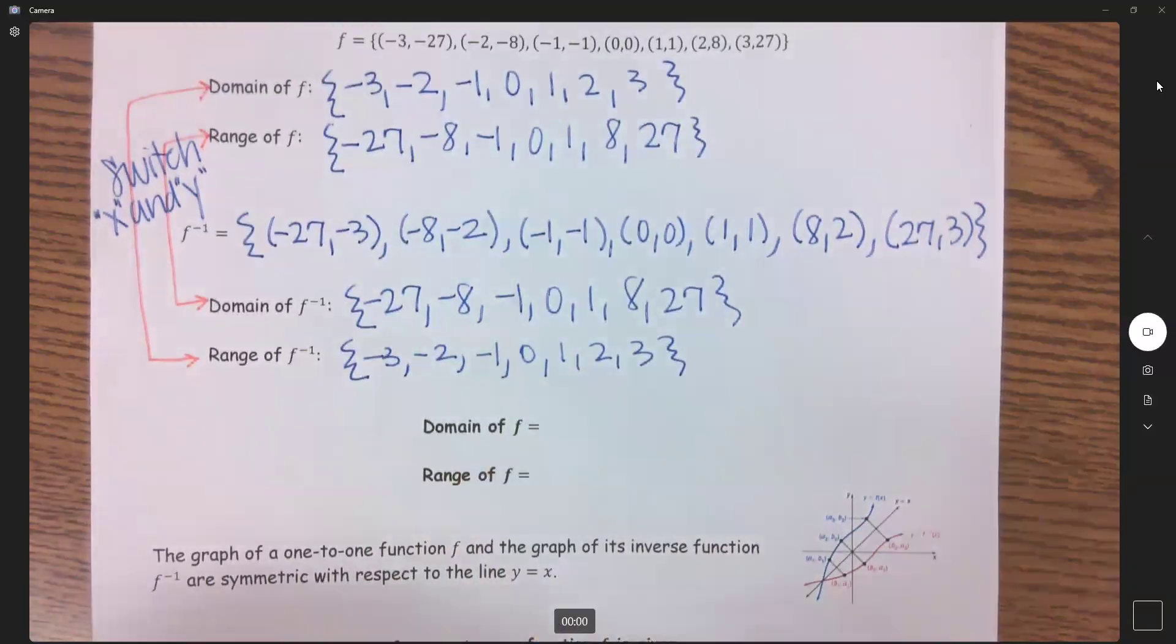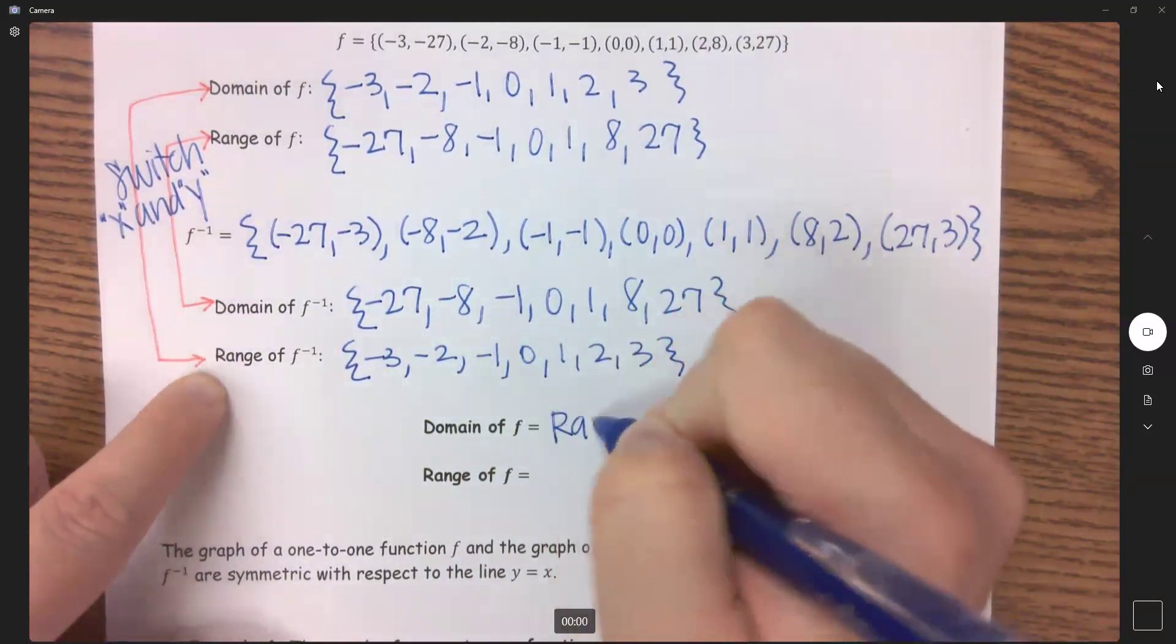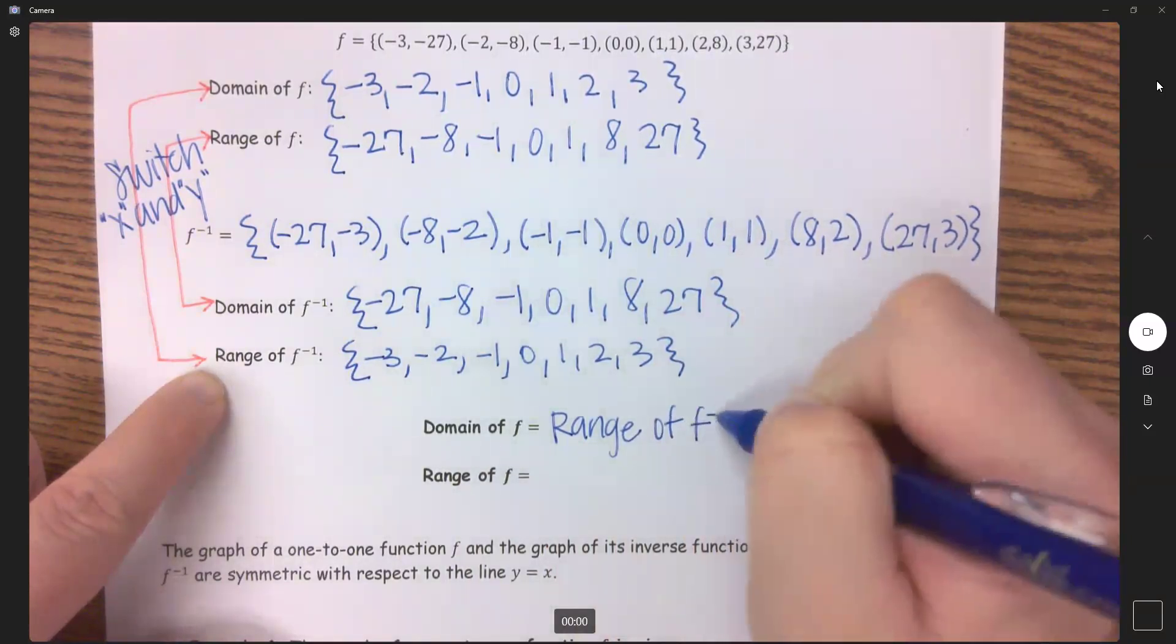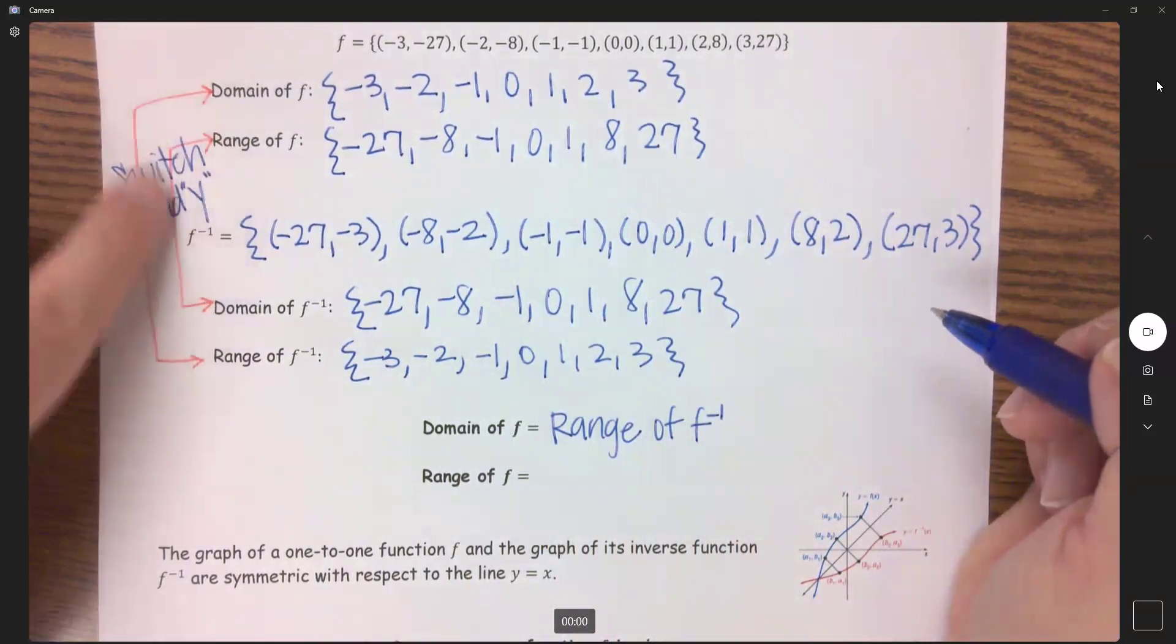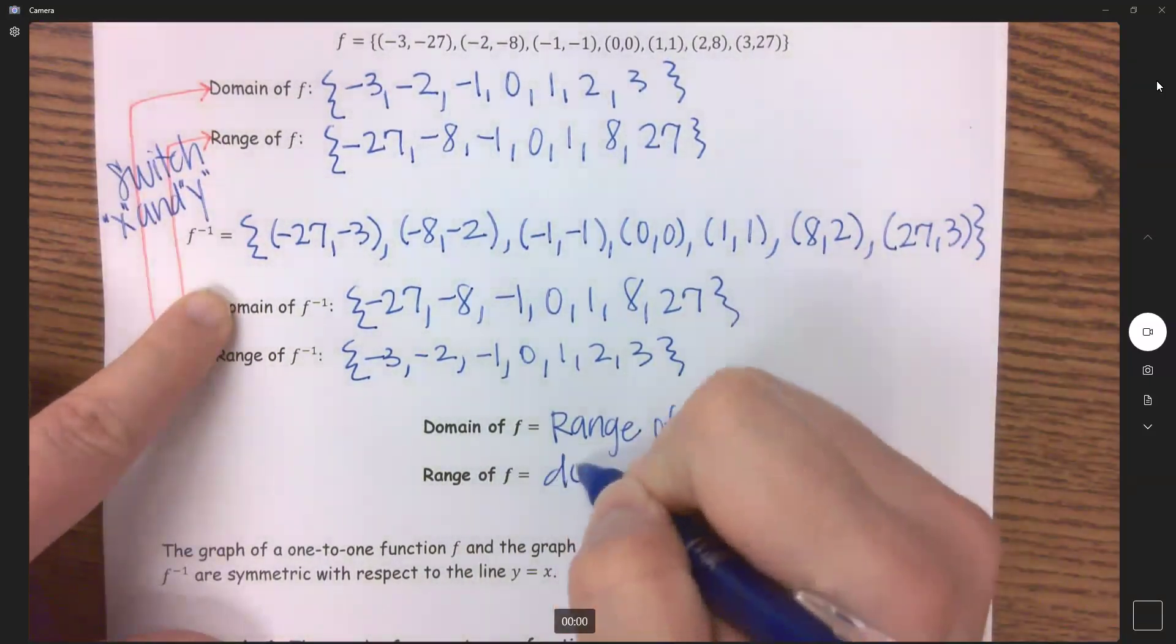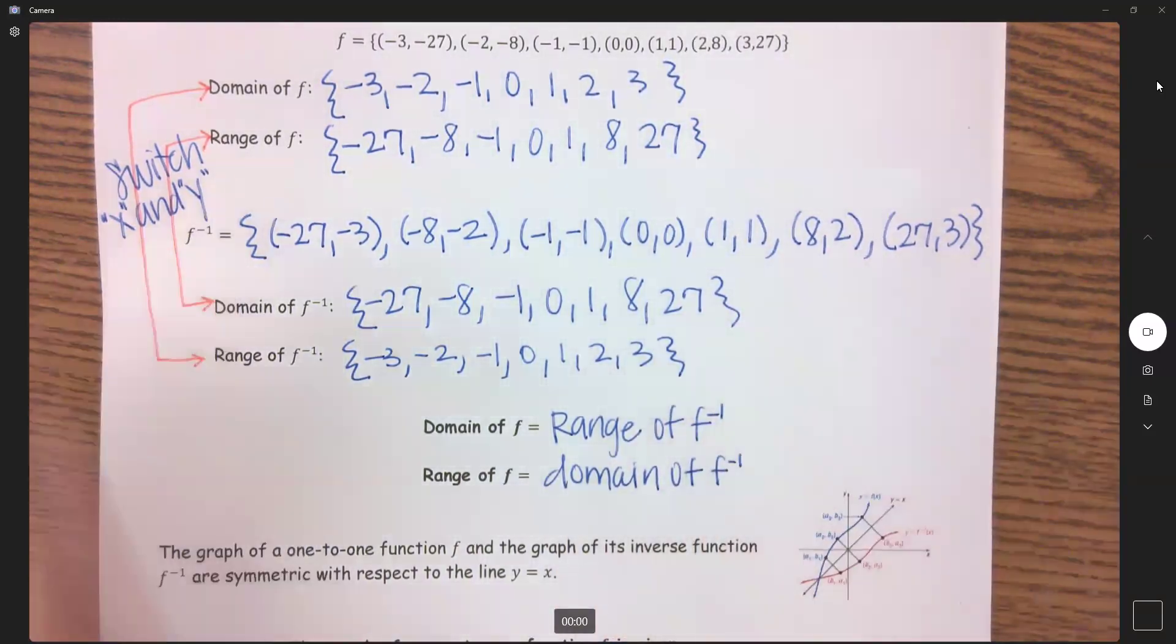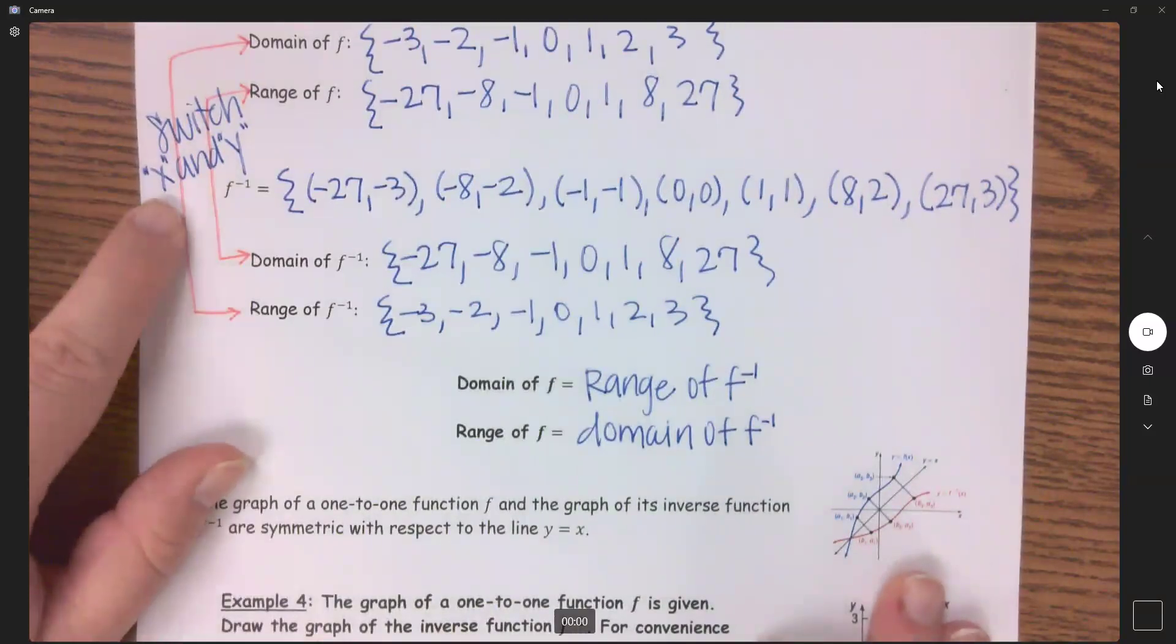So the domain of my function is the range of my inverse and the range of my function is the domain of the inverse. So those are always going to switch because we're switching x and y.